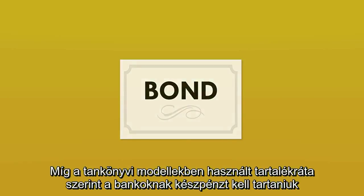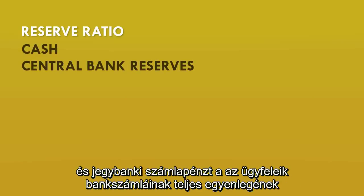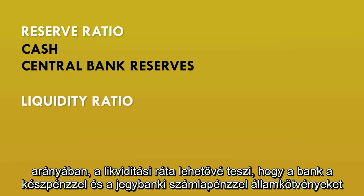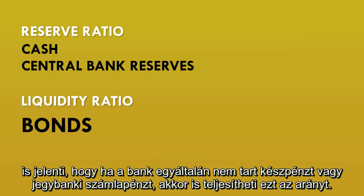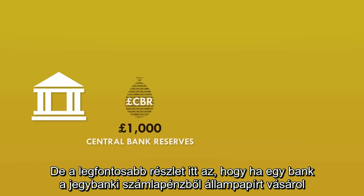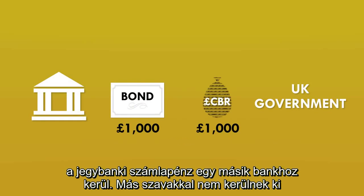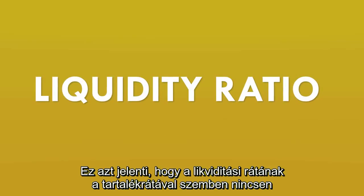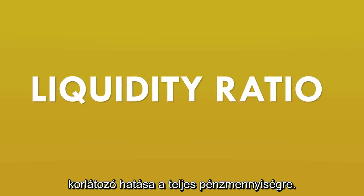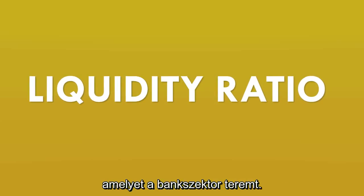While the reserve ratio used in the textbook model requires banks to hold cash and central bank reserves in proportion to their customers' total account balances, a liquidity ratio actually allows the banks to use that cash and central bank reserves to buy bonds. The bonds also count towards the liquidity ratio, meaning that a bank could hold no cash or central bank reserves at all and still meet the ratio. When a bank uses central bank reserves to buy bonds, the reserves then belong to another bank — they're not removed from circulation; they're still circulating through the system. This means that a liquidity ratio has no limiting effect on the total amount of money the banking sector as a whole can create.